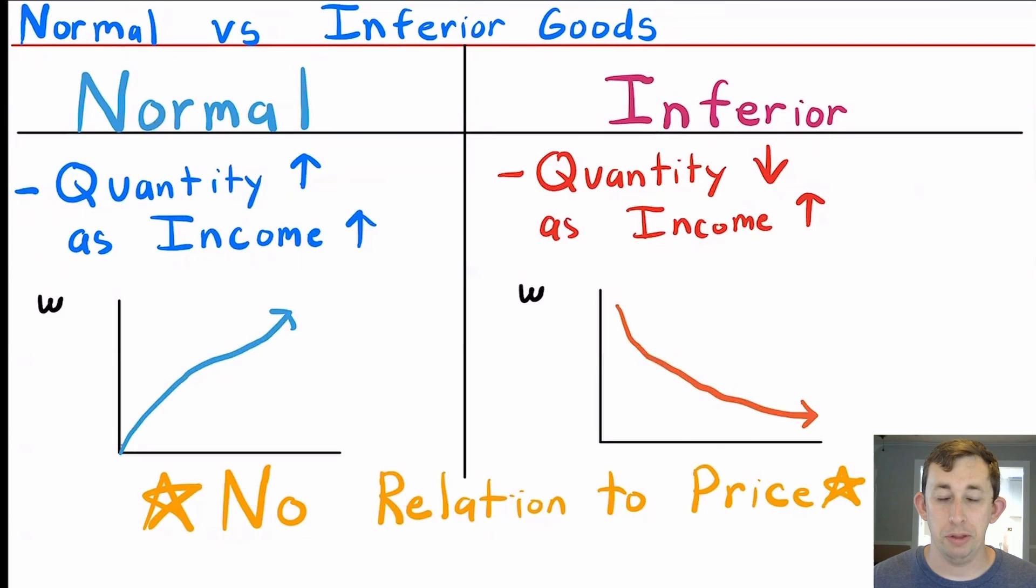When we talk about the quantity with regards to price, we're talking about an ordinary or Giffen good. Here though, we are not talking about prices. We're talking about wealth.